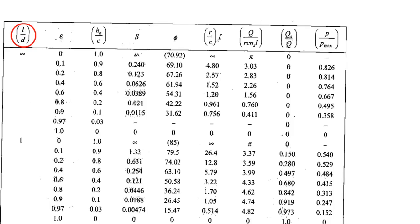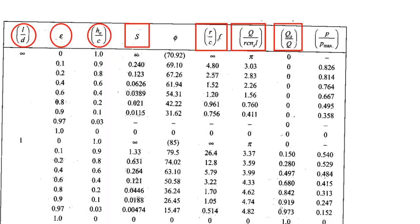Always start by finding the l/d ratio first. Key parameters are: eccentricity ratio epsilon, ho/c (minimum oil film thickness to clearance ratio), and Sommerfeld number S = (r/c)² × (mu·ns/p). Also needed: radial clearance c, radius r, coefficient of friction f, flow q = r·c·ns·l, and qs/q.